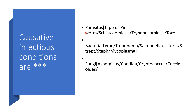Other agents could be parasites like tapeworm or pinworm, schistosomiasis, trypanosomiasis, or toxoplasmosis. It might be secondary to bacteria like Lyme, Treponema pallidum, Listeria monocytogenes, Salmonella, Streptococcus, Staphylococcus, or atypical organisms known as Mycoplasma. It can also be secondary to fungi, including Aspergillus, Candida, Cryptococcus, or Coccidioides.